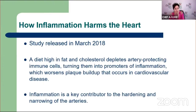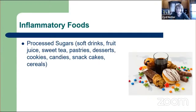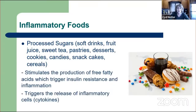The bad news—which foods are inflammatory. The first one is processed sugar, specifically refined sugars found in soft drinks, fruit juice, sweet tea, pastries, desserts, cookies, candy, snack cakes, and cereals. Sugar stimulates the production of free fatty acids, which triggers insulin resistance and inflammation. Sugar also triggers the release of inflammatory cytokine cells, and just 40 grams of sugar a day—like one can of pop—leads to a big increase in inflammatory markers, weight gain, and LDL cholesterol.